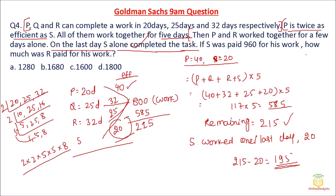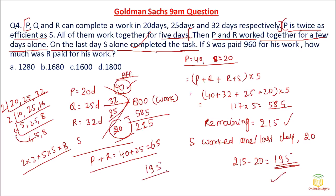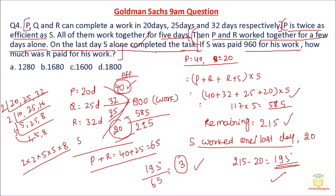P and R together worked to complete 195 units. P can do 40 units per day and R can do 25 units per day, so together they do 65 units per day. Therefore they worked for 195/65 = 3 days. In total: first 5 days all worked together, then 3 days P and R worked, and the last day S worked — so S worked for 5 + 1 = 6 days total. If S was paid Rs. 960 for his work, this helps calculate per-day wages.